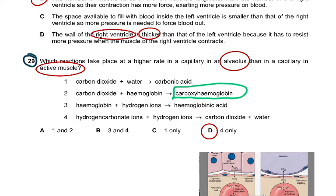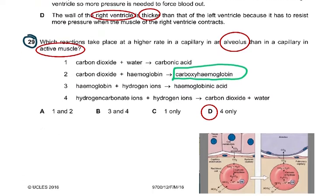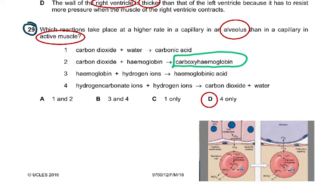Which reactions take place at a higher rate in a capillary in an alveolus than in a capillary in an active muscle? In an alveolus, CO₂ is going back into the alveoli so we can exhale it. The answer was reaction 4 only, because hydrogen carbonate ions and hydrogen ions combine to form carbonic acid, which dissociates into CO₂ and water, and that CO₂ moves out into the alveolus. There is a diagram which helps you understand this part of the syllabus — please revise it if you don't remember.